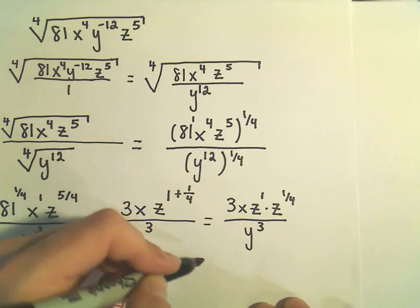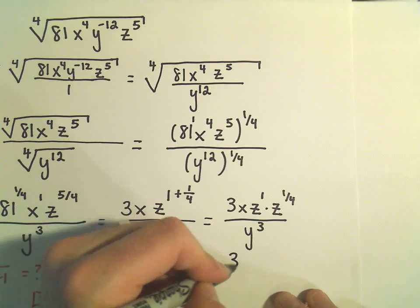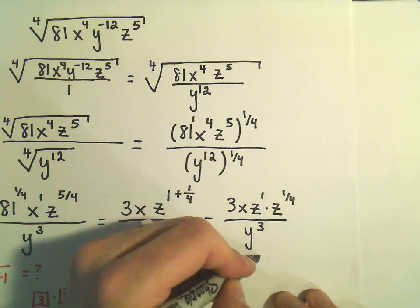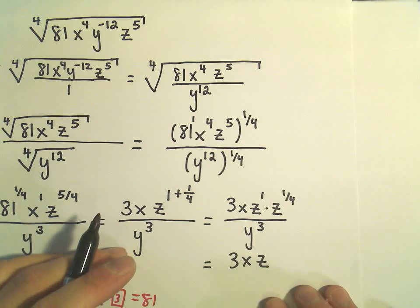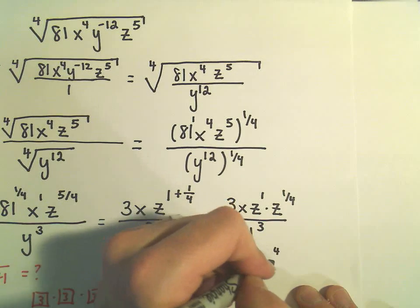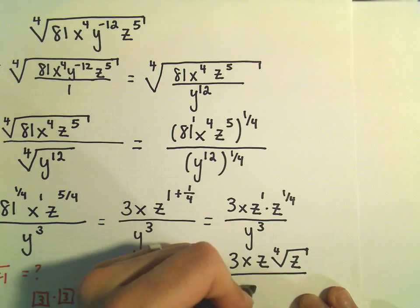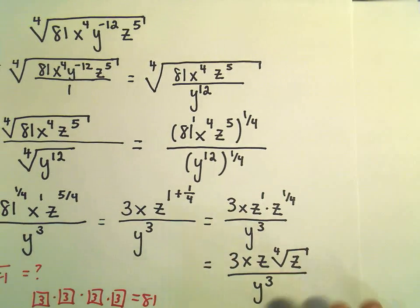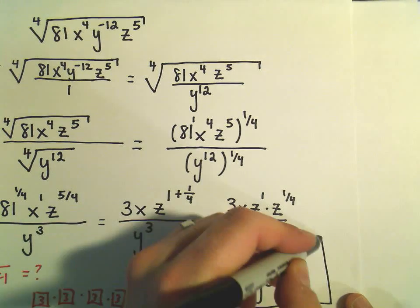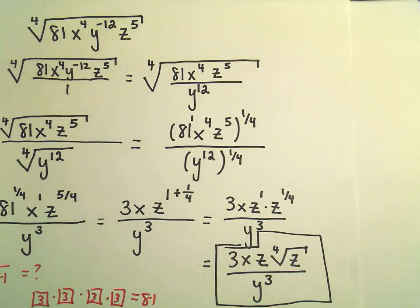Then we have y to the third. So the last thing I'm going to do here is just simply rewrite. I've got z to the one-fourth power. I'm just going to write that as the fourth root of z. And everybody else, their exponents are nice positive whole numbers, nice positive integers. So I'm going to leave those alone. And I think this would now be a nice simplified form.